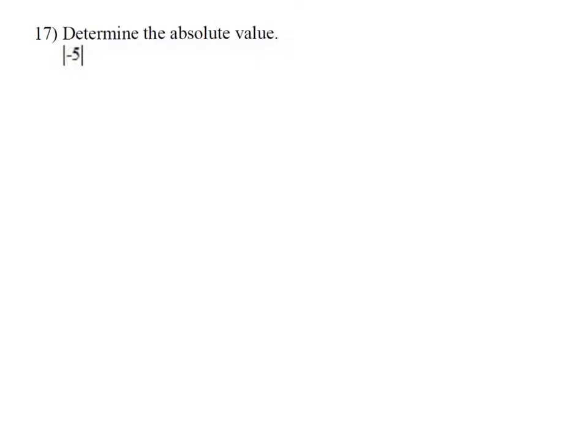Absolute value is defined as the distance from 0. So if we graph negative 5 on a number line, and then ask ourselves, how far is negative 5 from 0?